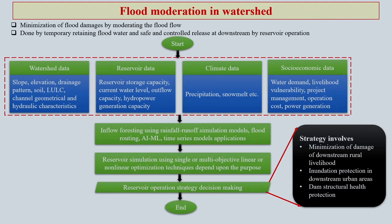Suppose you get a warning that there could be a flood situation — how can you moderate that situation in a watershed? Minimization of flood damages by moderating the flow of flood is one aspect of flood moderation. This moderation is largely done by temporary retaining of flood water and through safe and controlled release towards the downstream.